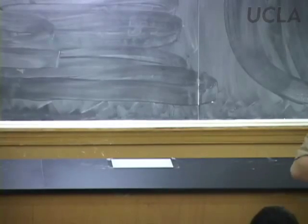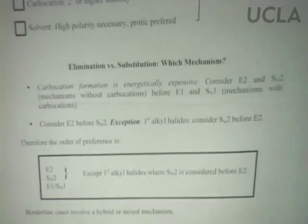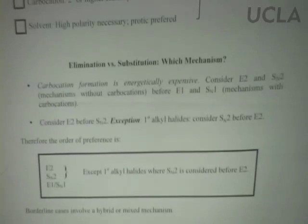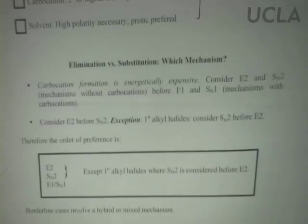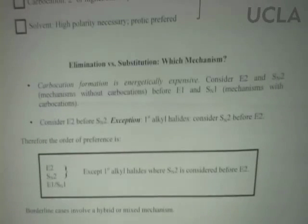E1 and SN1 will compete in terms of rate — both will happen. So the order of preference is: look at E2 first (except for primary alkyl halides). If E2 conditions are reasonably well met — pretty good base, pretty good leaving group, periplanar beta hydrogen — then E2 is probably the major pathway. If E2 conditions aren't met, look for SN2. If SN2 conditions are well met, assume SN2 is the major pathway. If not, look at the carbocation pathways. But none of these have to happen.